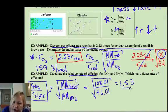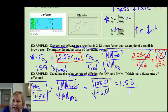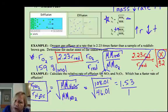So, that means that my ratio is that NO2 is 1.53 times faster than N2O5. 1.53 to 1. And that makes sense, because this is a smaller molecule. The smaller the molecule, the faster the rate.